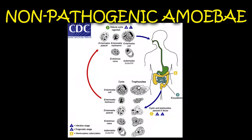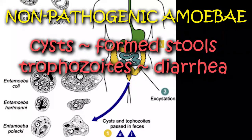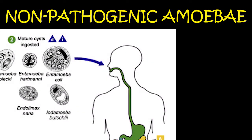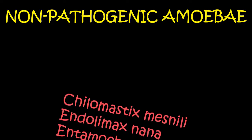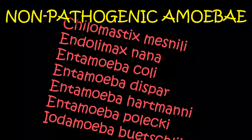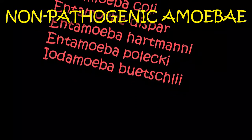Non-pathogenic intestinal protozoa are single-celled parasites commonly found in the intestinal tract. They are passed out in stools, much like pathogenic protozoans. Cysts are typically found in formed stool, whereas trophozoites are typically found in diarrheic stool. Humans get these organisms when they ingest food or water contaminated by stools of infected individuals. These include Chilomastix mesnili, Endolimax nana, Entamoeba coli, Entamoeba dispar, Entamoeba hartmanni, Entamoeba polecki, and Iodamoeba butschlii.